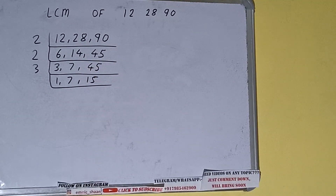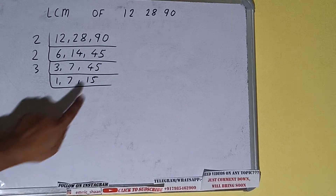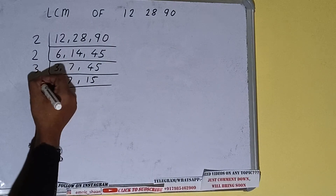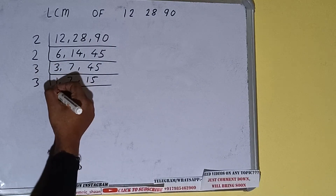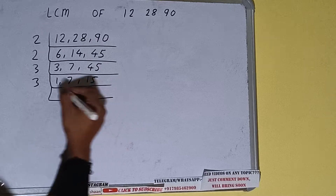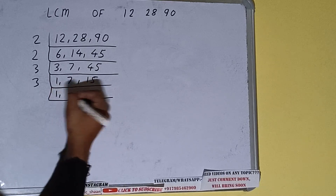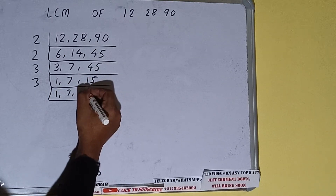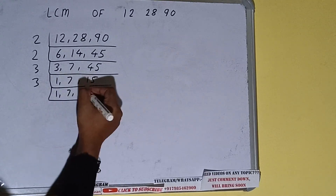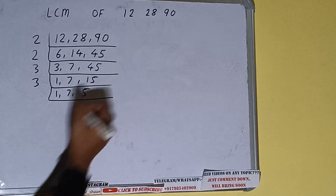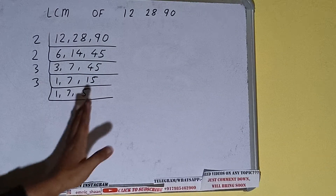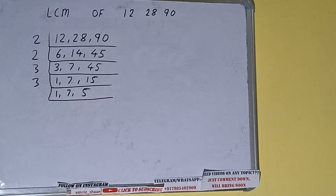Again if we check, only the last number is divisible by 3, so we'll divide only the last number and the first and second number we'll just copy down. This remains 1, this remains 7, and 15 divided by 3 becomes 5. Now if we check, none of the numbers are divisible by 3.